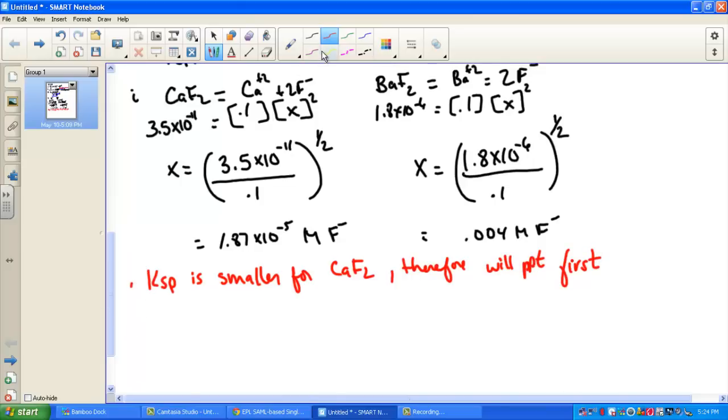Looking ahead, it asks us to calculate the minimum concentration of F⁻. This part ii was done right here. To get the minimum amount to get the calcium fluoride to precipitate, we calculated 1.87 times 10 to the negative 5th molar units. The math was verified above, so we actually tackled both questions at the same time.